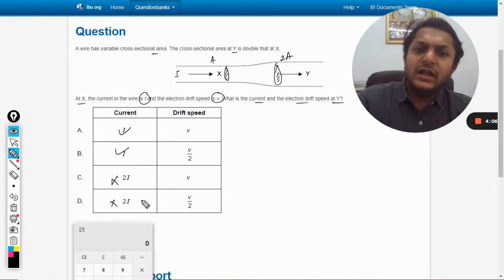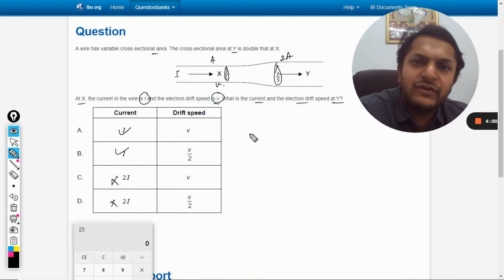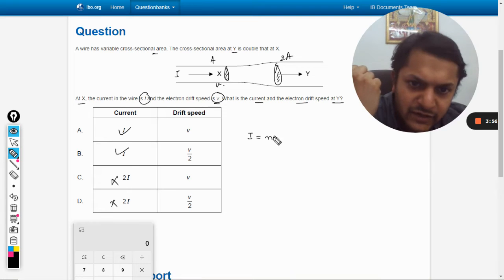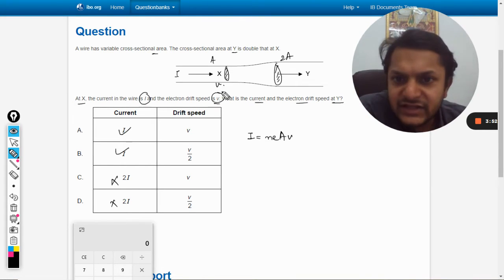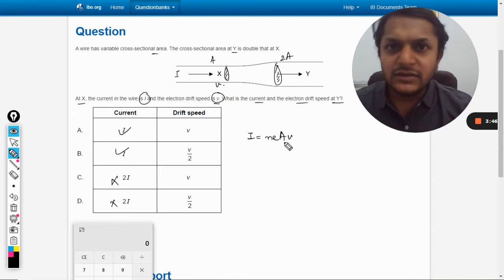Now the drift velocity in x is given as v, so we'll be using the formula for drift velocity: i = nAeV, where V is the drift velocity.